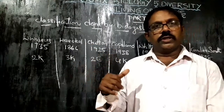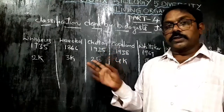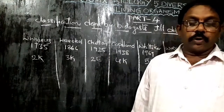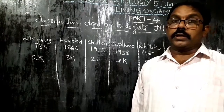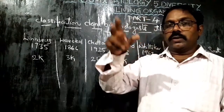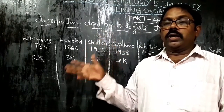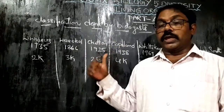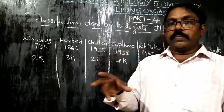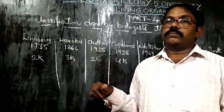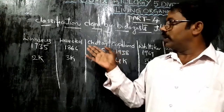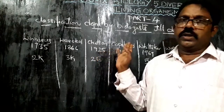In 1925, Chatton gave the Two Empires classification: Prokaryota and Eukaryota. In Prokaryota, the nucleus and nuclear membrane are absent, so they cannot control the total cell functions. Eukaryotes, on the other hand, have a true nucleus.